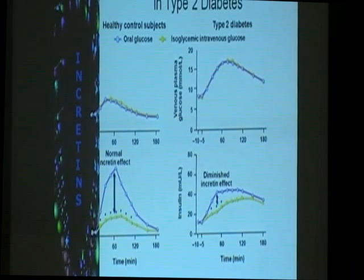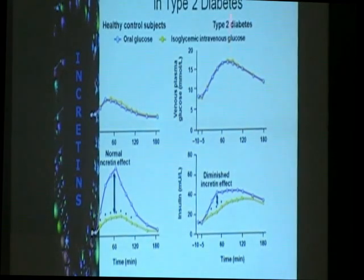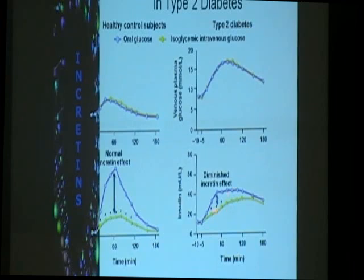So there's something in our gut — those are the incretins we discussed — and that seems to be absent or diminished in our diabetic patients. This side of the graph shows the diabetic patient. As you can see, when given the same amount of glucose, even if the blood sugar levels are the same for IV or oral, the diabetic patient is not able to mount the same insulin response.